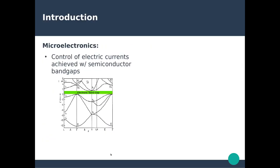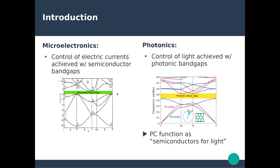Photonic crystals are also interesting in the sense that they can be compared to semiconductor electronics. In microelectronics, the whole purpose is to control electric current within semiconductors using their electronic band gap. This is the electronic structure of silicon, showing the different electronic states where electrons can sit, and a small range of energy where no electronic state is available. Something similar can be done for photonic crystals — this is a photonic band structure rather than an electronic band structure.